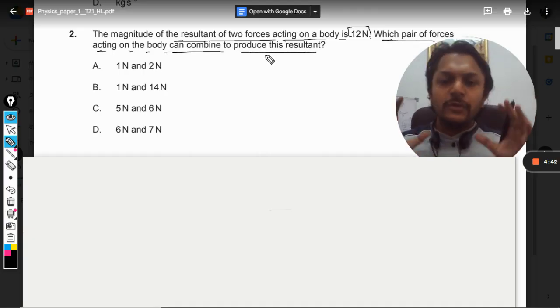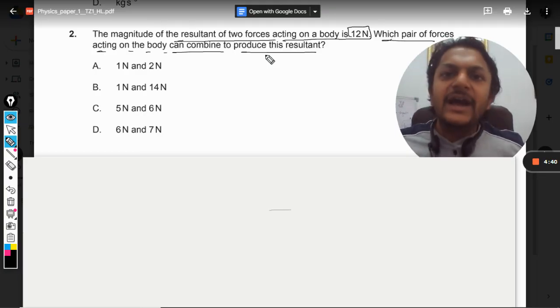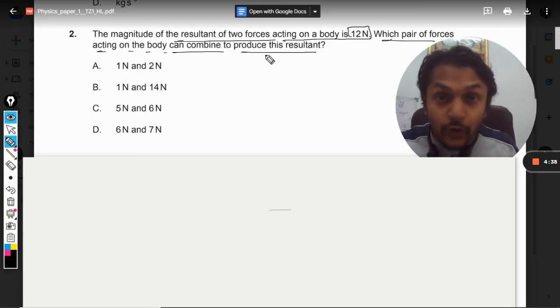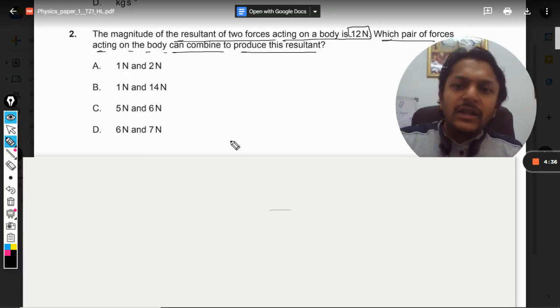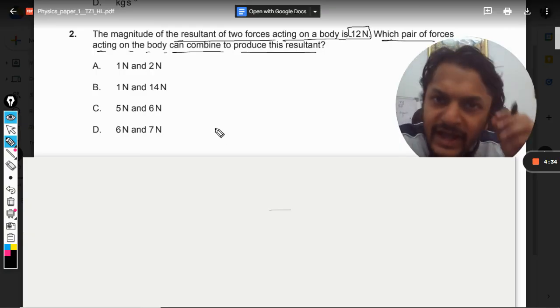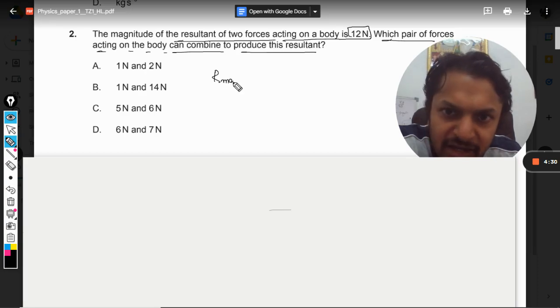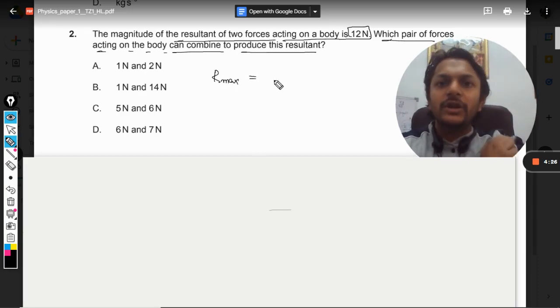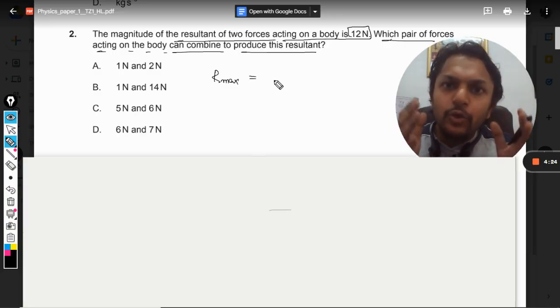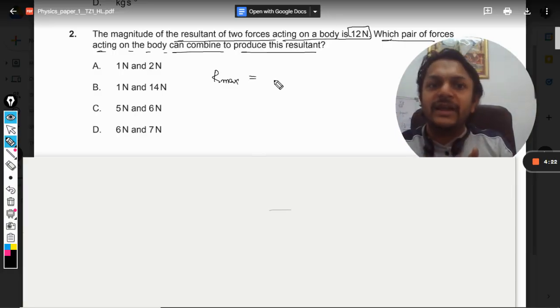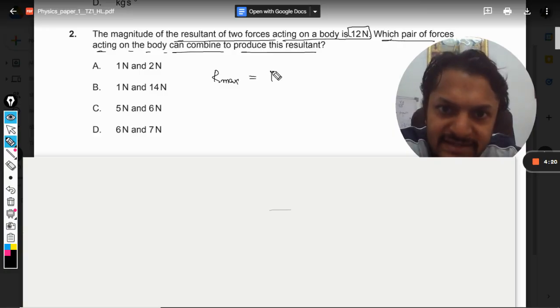Now, this question is taken from the chapter of vectors where we find the resultant of two forces. There is this characteristic of the resultant that the maximum value when two forces are acting on a body will happen when both forces are acting in the same direction. So I can say that it will be equal to F1 plus F2.